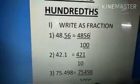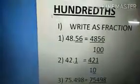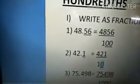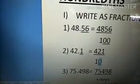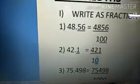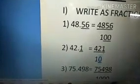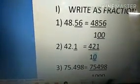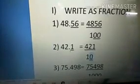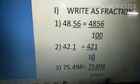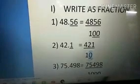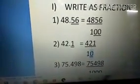Our second problem is 42.1. After the decimal point, how many digits do we have? We have just 1. So I write the same number without the decimal: 421. In the numerator I have 421, divided by 10. I add only 1 zero in the denominator because after the decimal I have 1 digit. So our answer is 421 divided by 10.